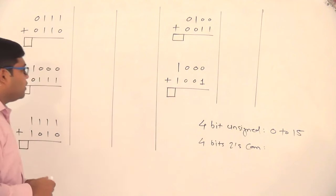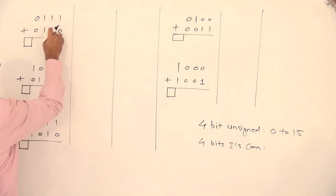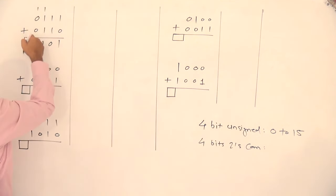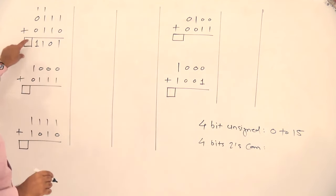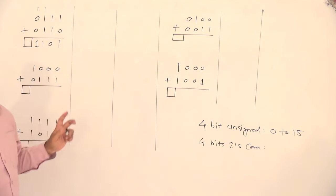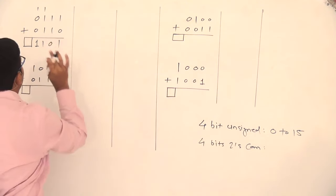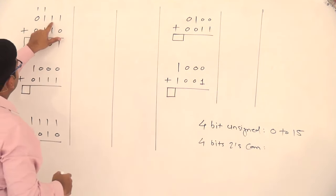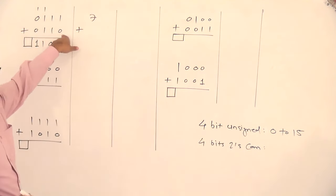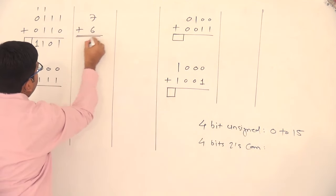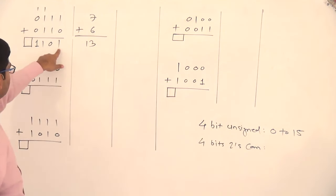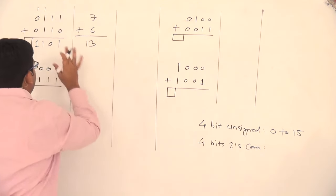Let us see what cases may happen. Adding bit by bit: 1 plus 0 is 1; 1 plus 1 is 0 with carry 1; 1 plus 1 plus 1 is 1 with carry 1; 1 plus 0 plus 0 is 1. In unsigned, 0111 means 7 and 0110 means 6, and the result 1101 comes out to be 13, which is 8 plus 4 plus 1. So the addition is correct.